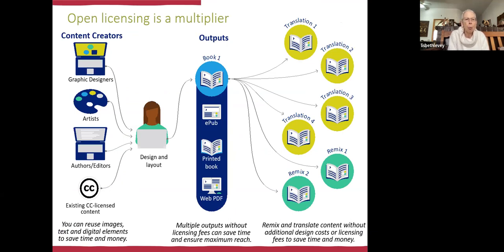This gives you an example of what can happen with open licensing. We call it a multiplier because the content creators, the graphic designers, the artists, the authors and editors — they all permit open licensing. You can create one book which gives you the possibility to translate it into numerous languages. It also gives you the ability to remix and adapt it. If you create a work in Malawi and someone in Nigeria wants to use it, the Nigerian content creators will want to use Nigerian terms and other changes to localize the work. With open licensing, this is a possibility.